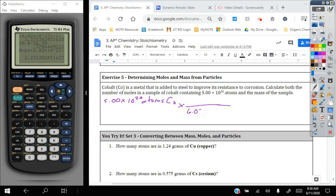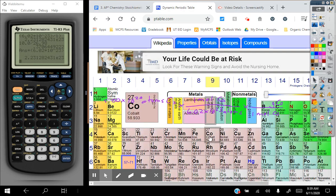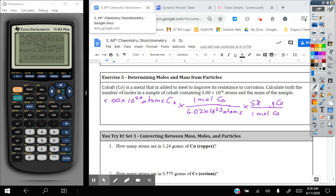If we're starting in atoms, 6.02 times 10 to the 23rd has to be on the bottom so that my atoms cancel out. And my one mole of cobalt on top. And then if I have one mole of cobalt on top, one mole of cobalt is on the bottom. And I can put that on my top fraction here, 58.93.